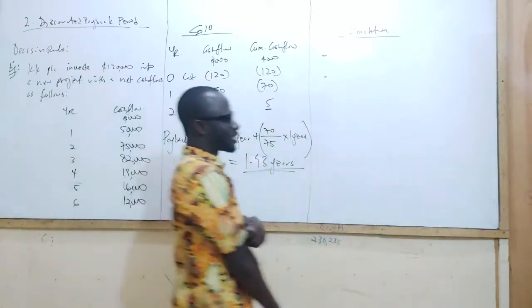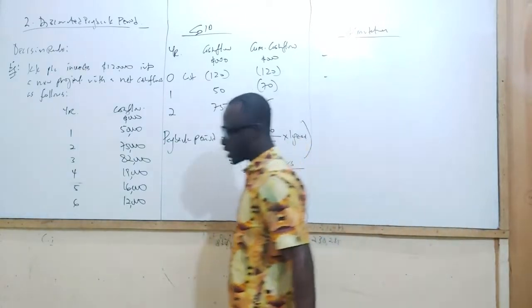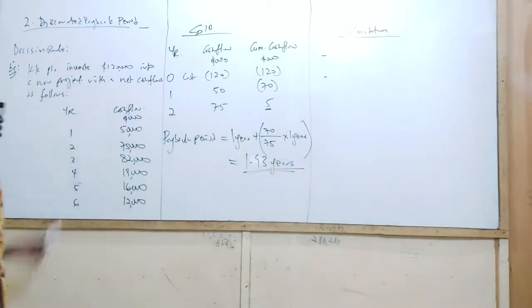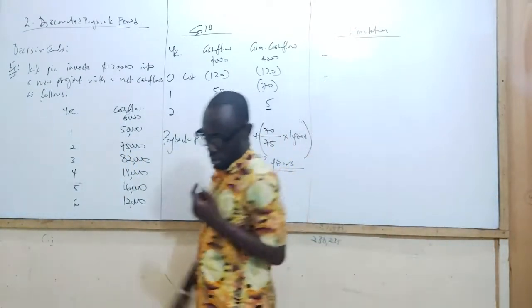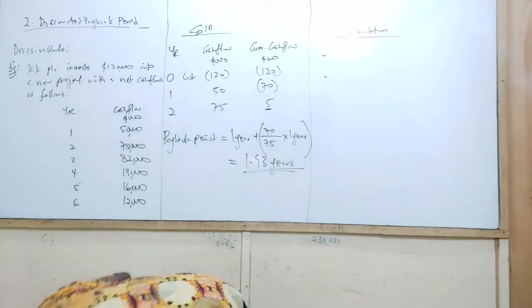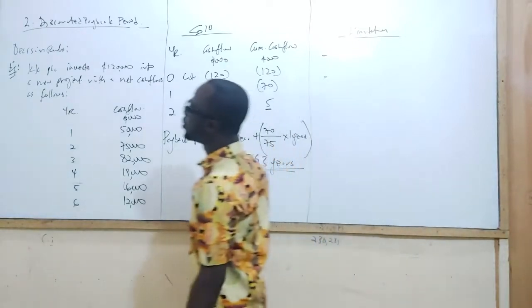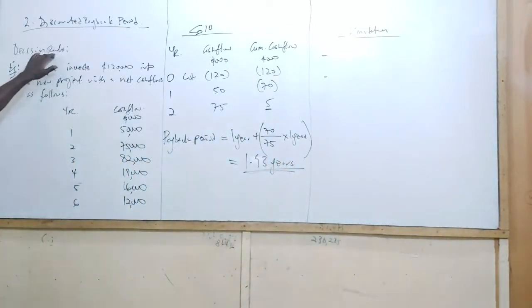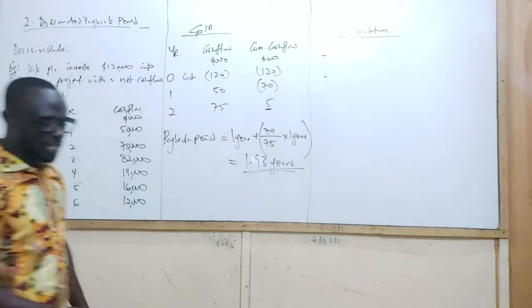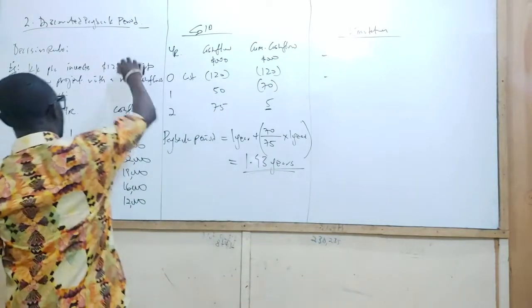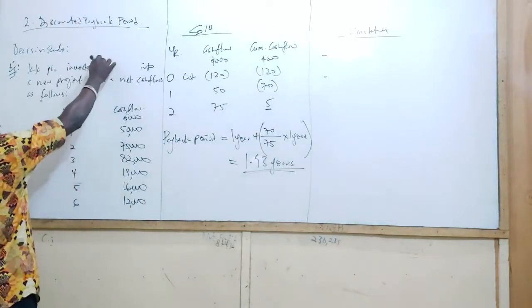So this time around, we're going to be discounting the cash flows. What is the decision rule here? It's the same thing — the shorter the period, the better it is for the company. So I'm going to be using the same example, but I'll modify it a little bit just to reflect what I want to illustrate well.